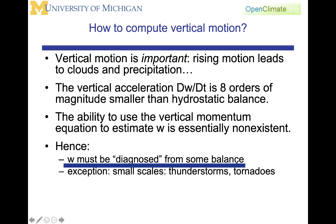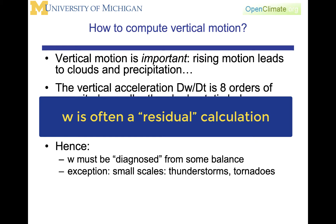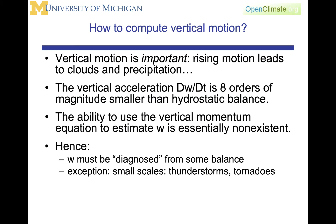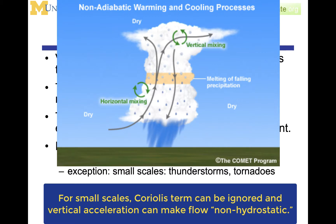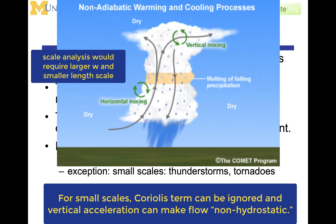Hence, w must be diagnosed from some sort of balance. We have to turn out w in a way that it is calculated so that the conservation principles are realized. That is, the w is often calculated as the term that when added to the other terms allows conservation to occur. There is an exception to this that w can be quite large at small scales, thunderstorms, and in tornadoes where the Coriolis effect is small, as well as where the vertical accelerations can become comparable to those accelerations that are represented in the hydrostatic balance.